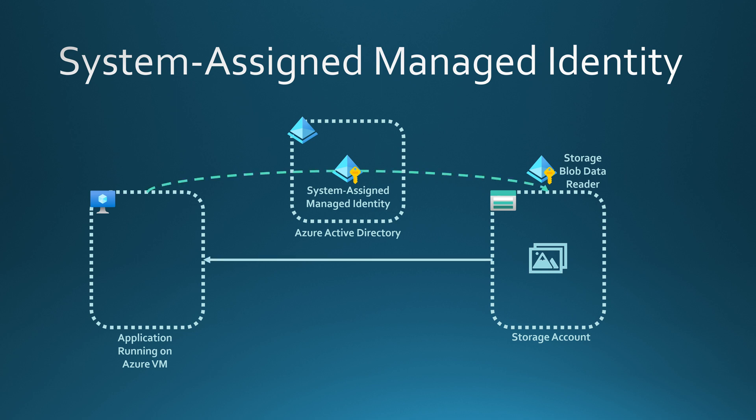Some of you might think this is pretty similar to using a service principal — and you are correct — but in my opinion this is a more convenient way, since there are no expiring secrets that are always troubling with service principals. Also, it is very important to understand that system assigned managed identity is very tightly coupled with the resource, meaning there can only be one system assigned managed identity per resource, and if the resource is deleted, the system managed identity will also be deleted from Azure AD.